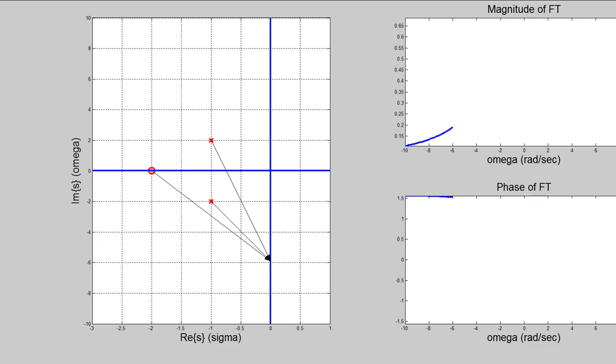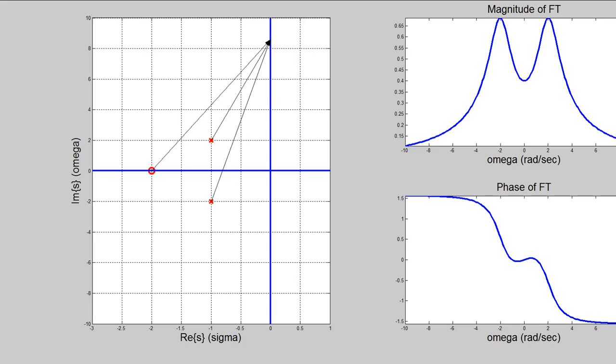This is what the evaluation of the Fourier transform looks like. In the top right, you can see the magnitude of the Fourier transform being traced out, and in the bottom right, the phase. In the left, you can see how the vectors trace along the j omega axis to find each one of those points and calculate it.